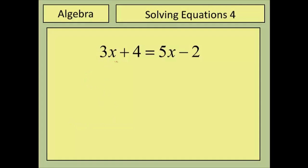In this video we're going to continue to look at solving equations, this time specifically equations that have unknowns on both sides. Take this one for example — we've got three x's and five x's on different sides of the equal sign, and this is going to create a problem for us.